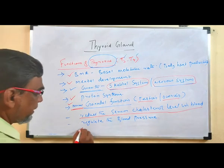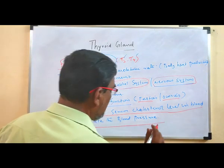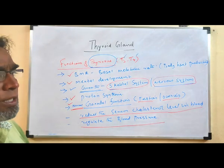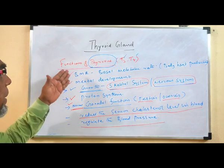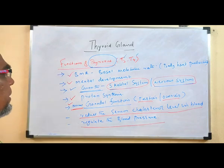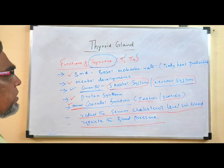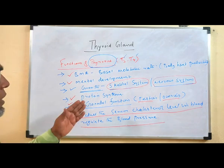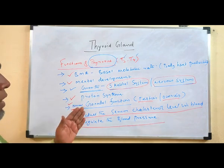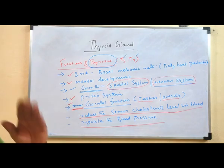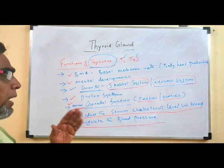Thyroxine also regulates blood pressure. So the functions of thyroxine are: it helps in growth of the nervous system, skeletal system, and mental development; helps in protein synthesis; helps in normal gonadal functions; reduces serum cholesterol level; and regulates blood pressure.